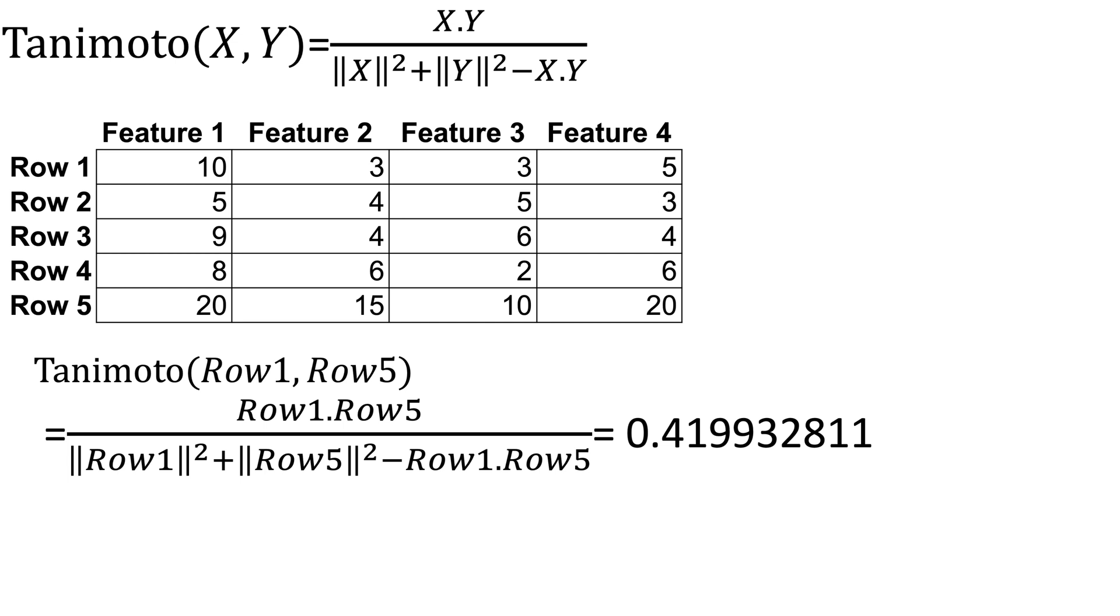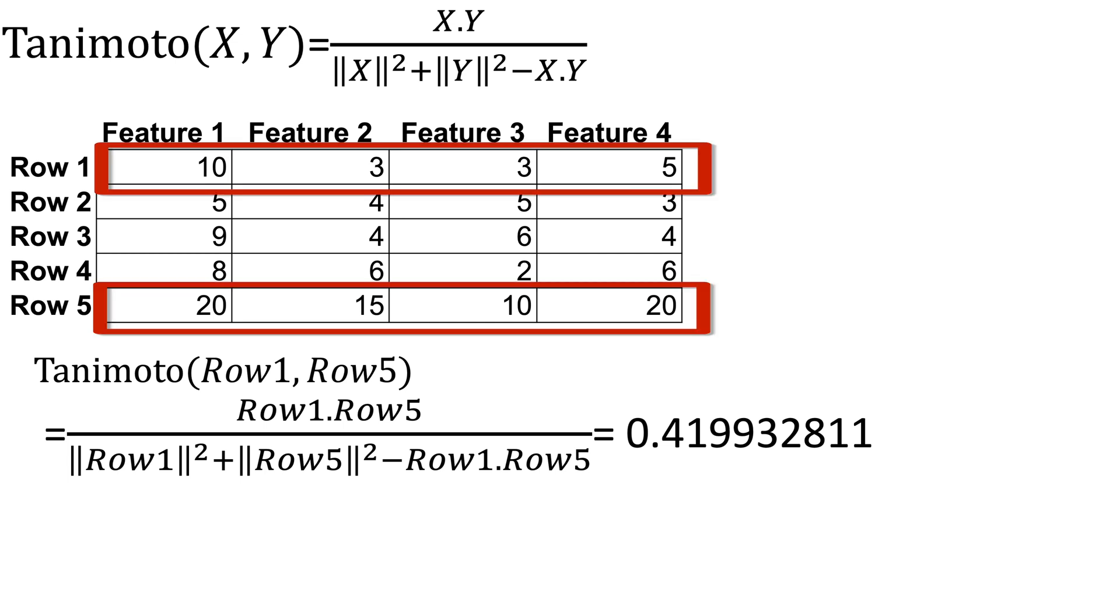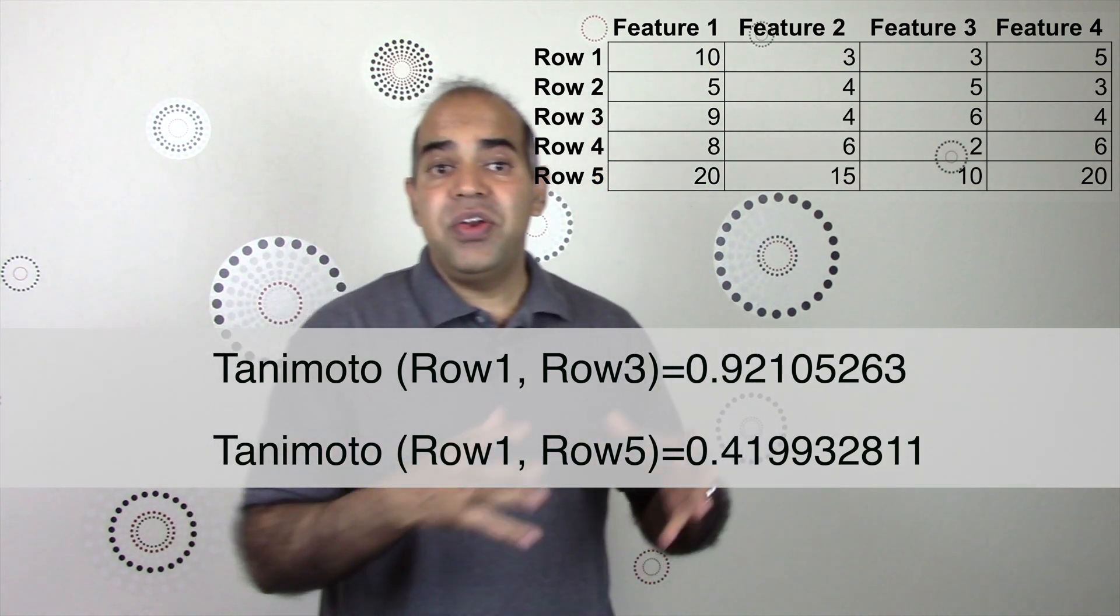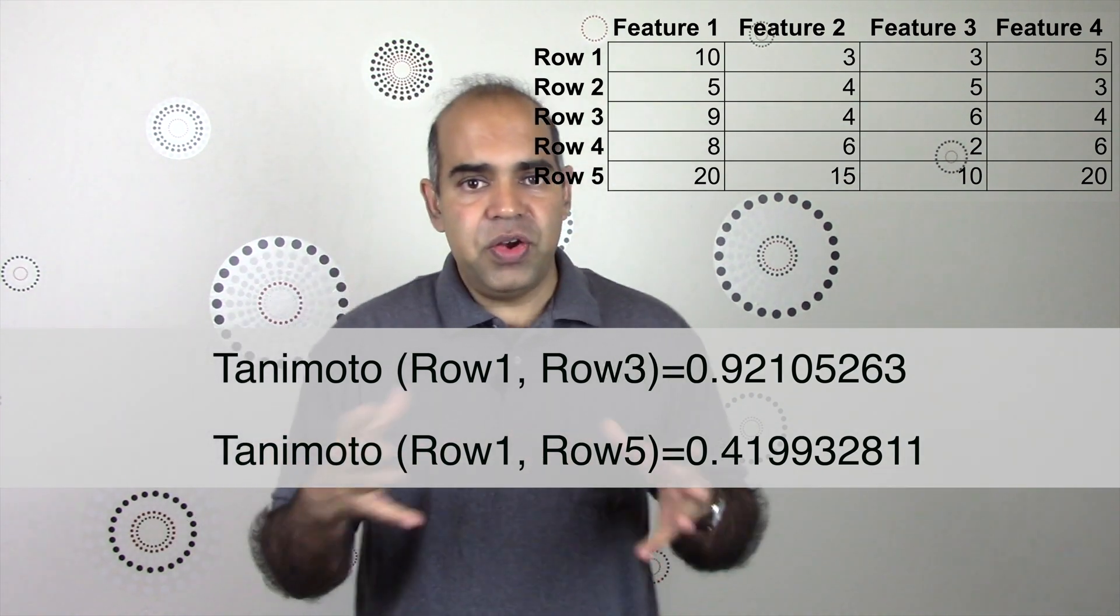Now, compute the Tanimoto similarity between row 1 and row 5. Row 1 contains 10, 3, 3, 5. Row 5 contains 20, 15, 10, and 20. Please do the calculations as a practice. You will find that the Tanimoto similarity between row 1 and row 5 is 0.419932811. Row 1 has a larger Tanimoto similarity with row 3 than row 5. Therefore, row 1 and row 3 are more similar than row 1 and row 5.